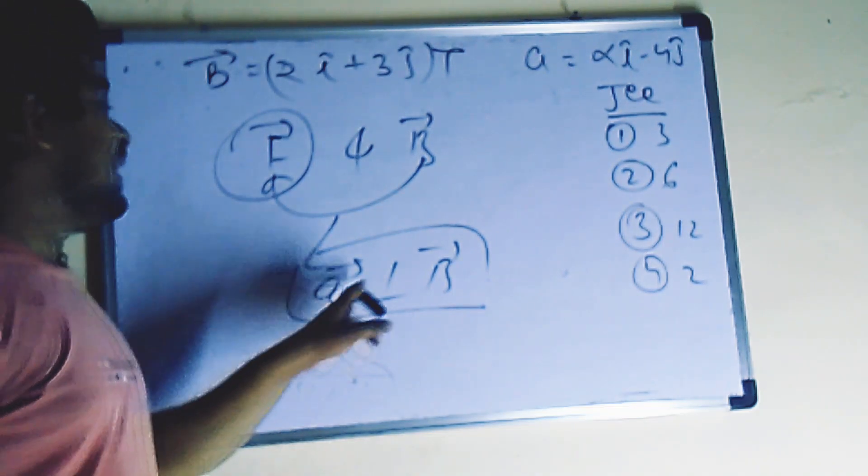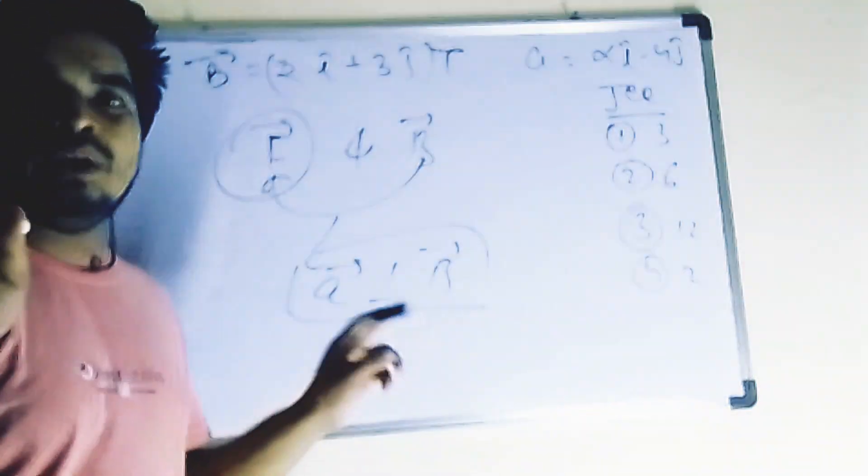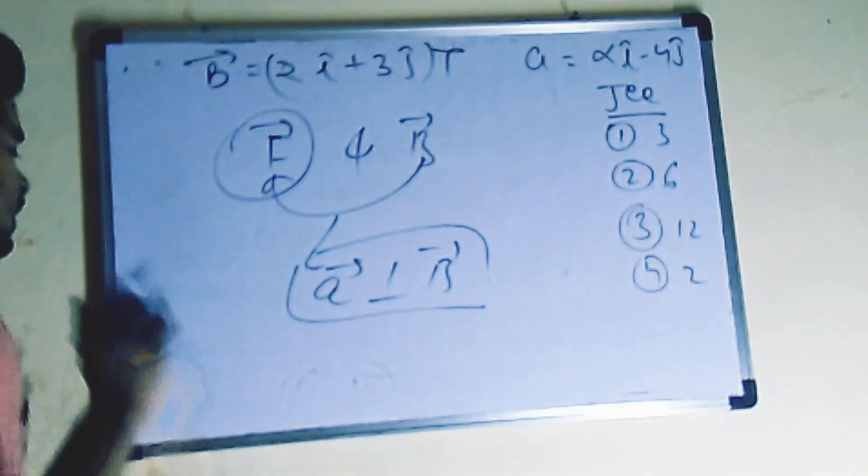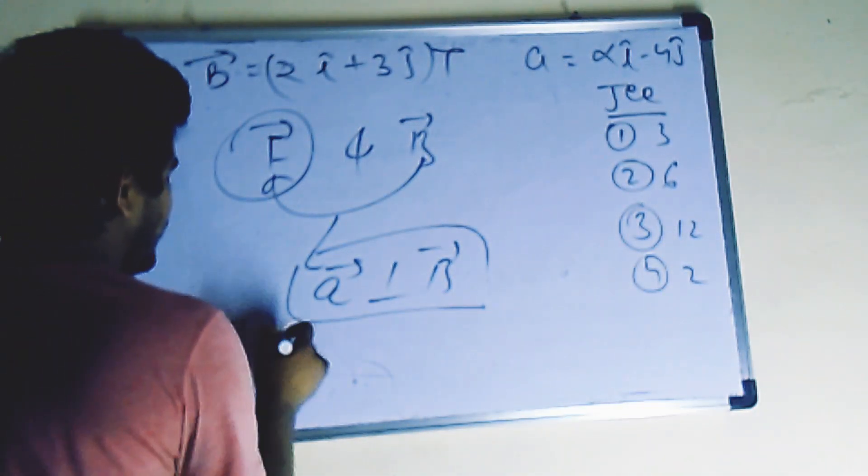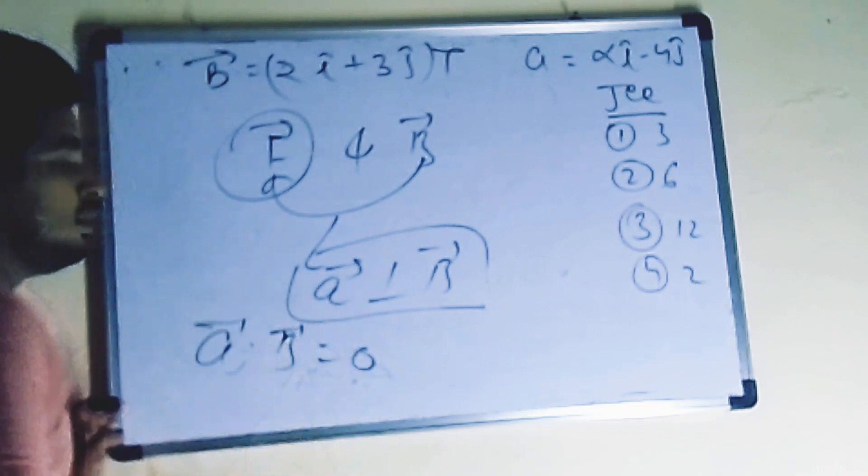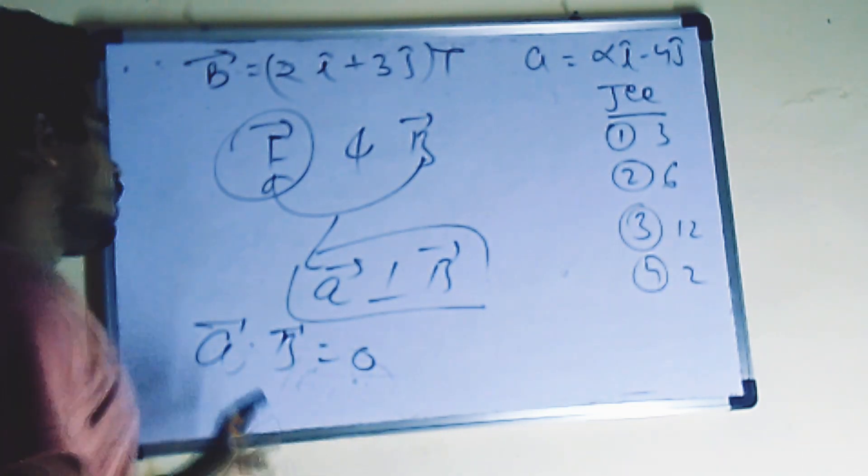Can I say A dot B equals zero? A dot B equal to zero. What is A?